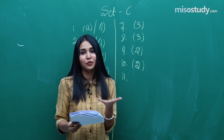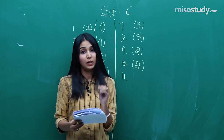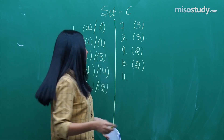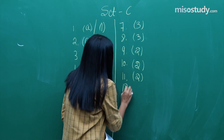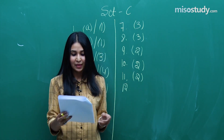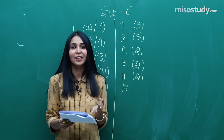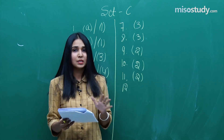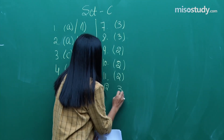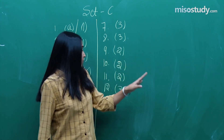Question number 11 in Set C was from surface chemistry. They went into the depth of the question — it wasn't superficial — and the answer is option B. Question number 12 was again from chemical bonding in inorganic, which is a pretty important part — a direct question — and the answer is option C.